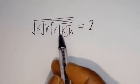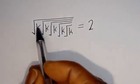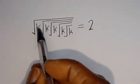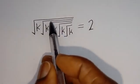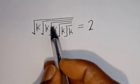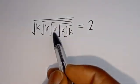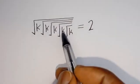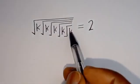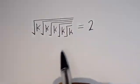Hello, how to solve for k in this equation: square root of k, times square root of k, times square root of k, times square root of k, times square root of k, is equal to 2.